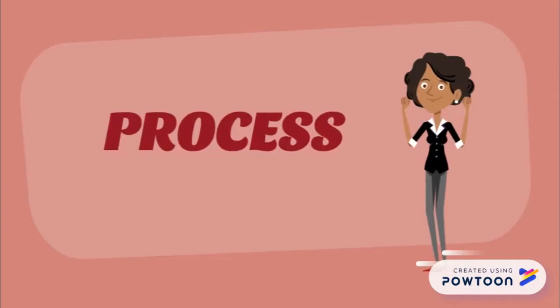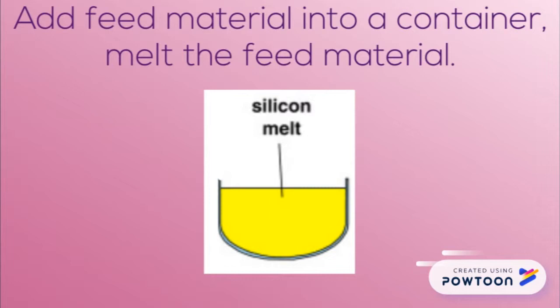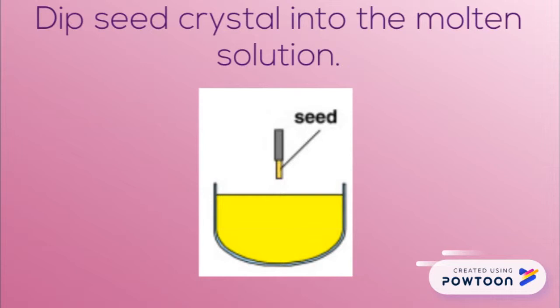For the process of this method, firstly, the feed material such as silicon is put into a cylindrical shaped container and melted. Then, a seed crystal rod which is rotated slowly is dipped into the molten solution from the top. Lastly, the seed crystal is slowly withdrawn from the molten solution and the product crystal is formed at the surface of the seed crystals.